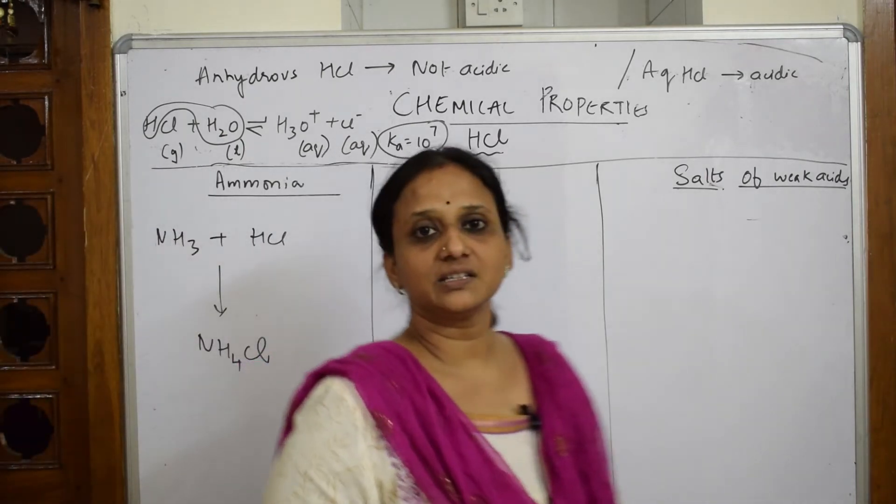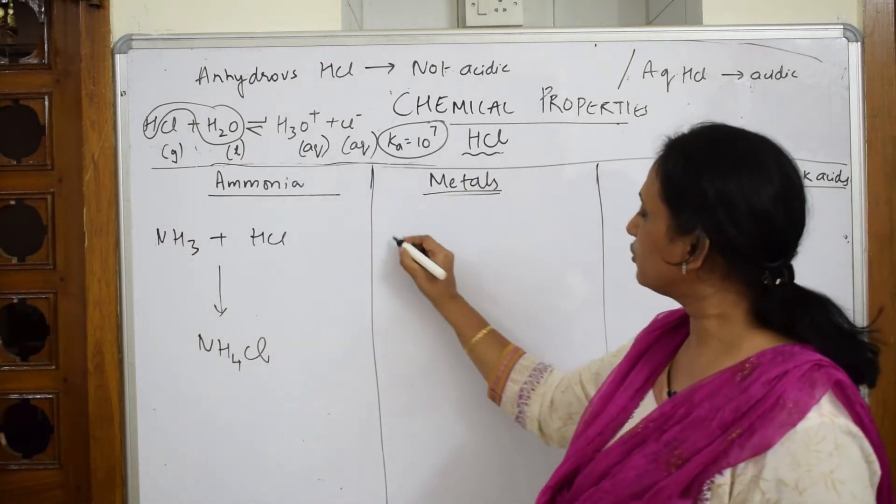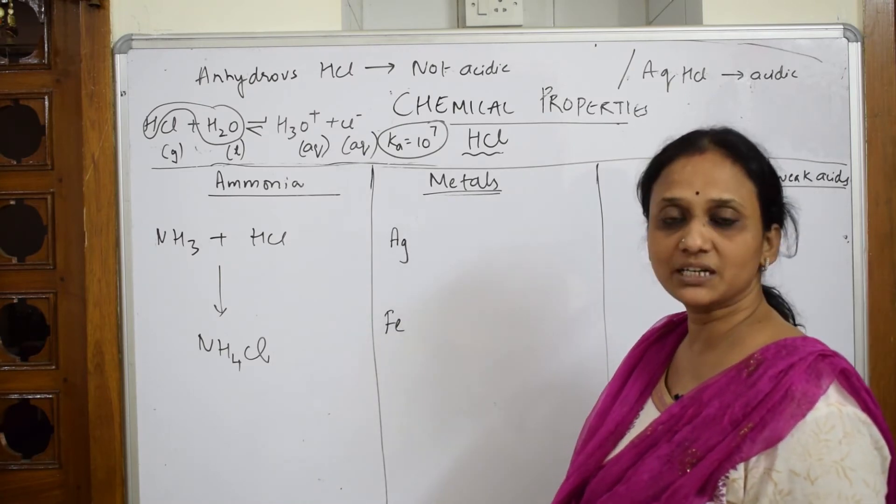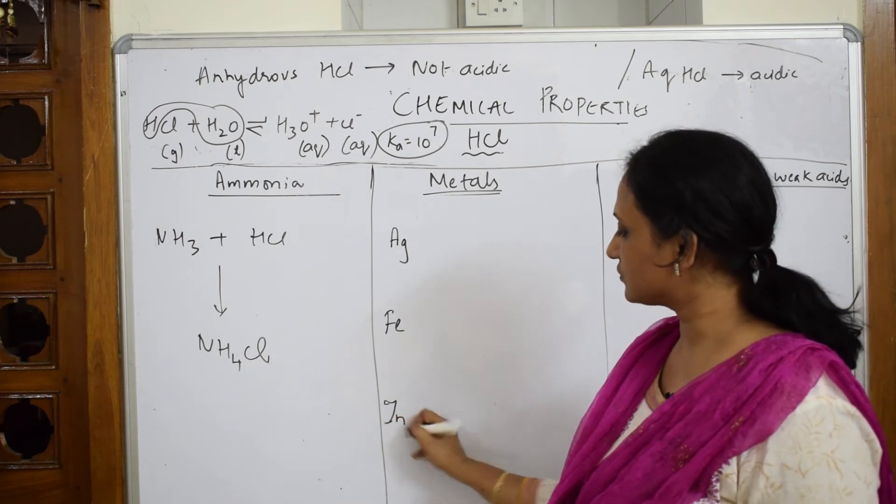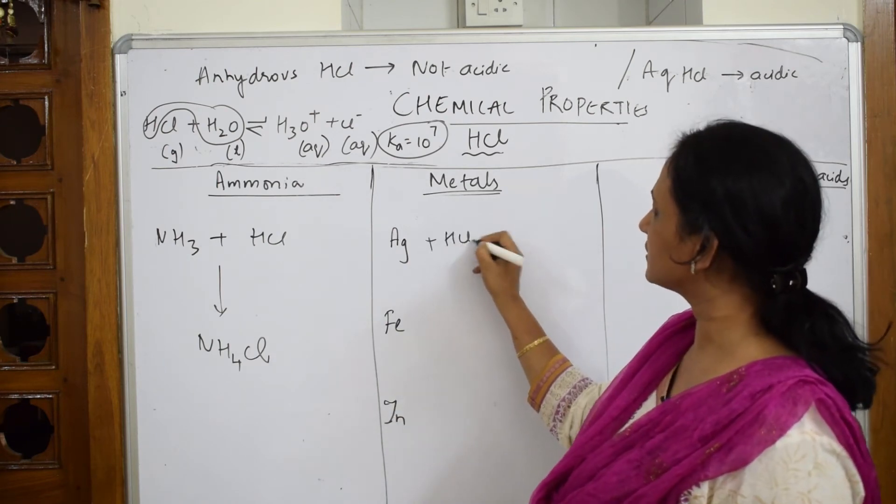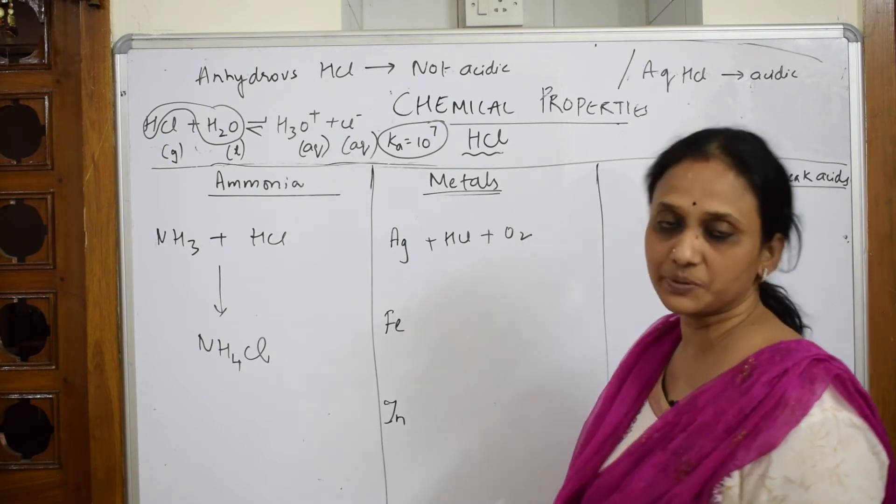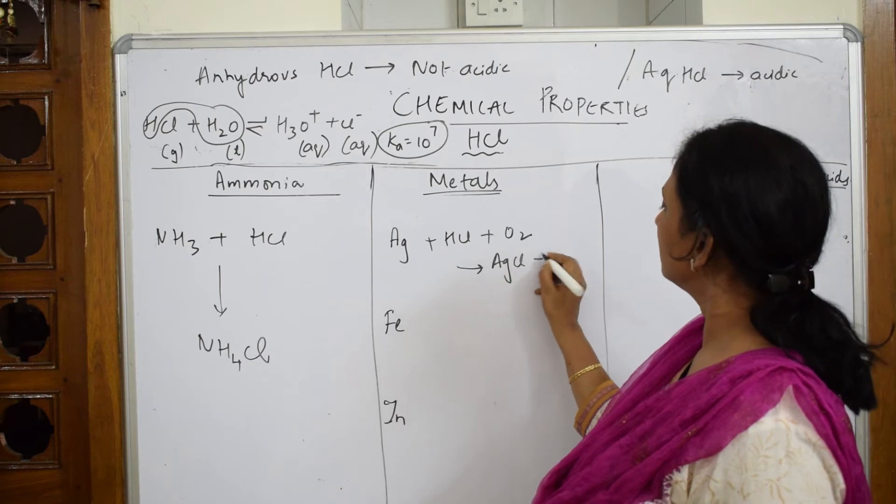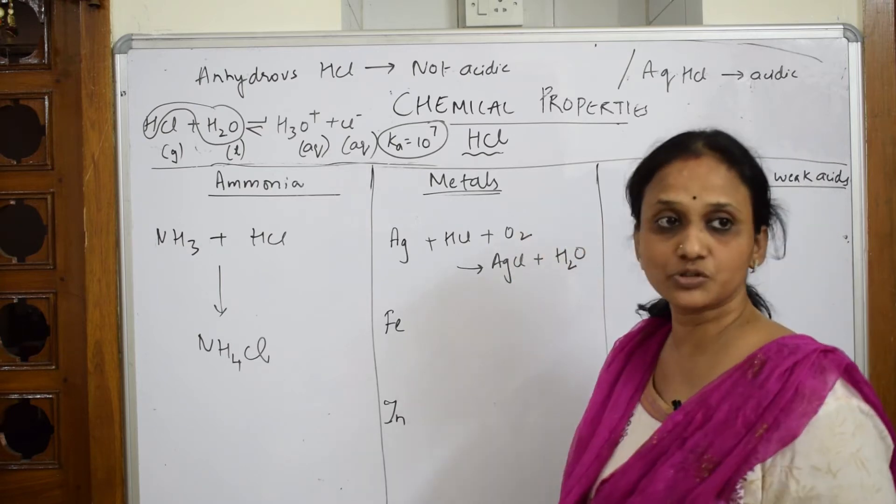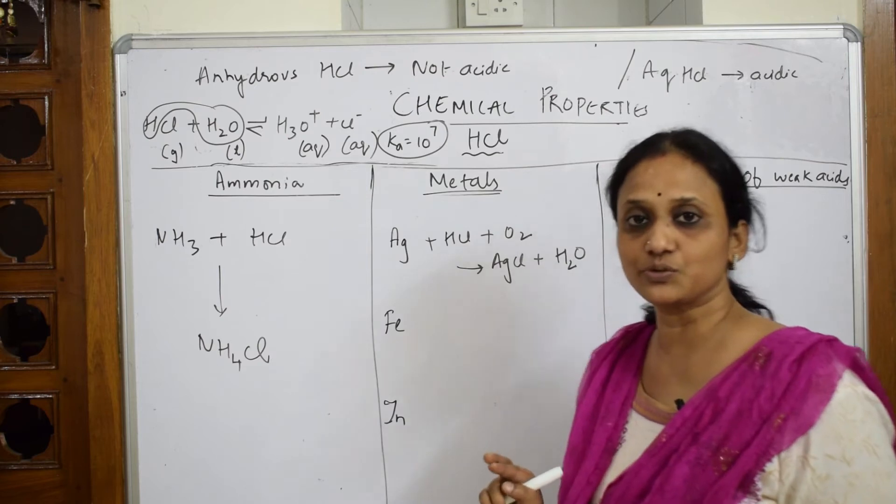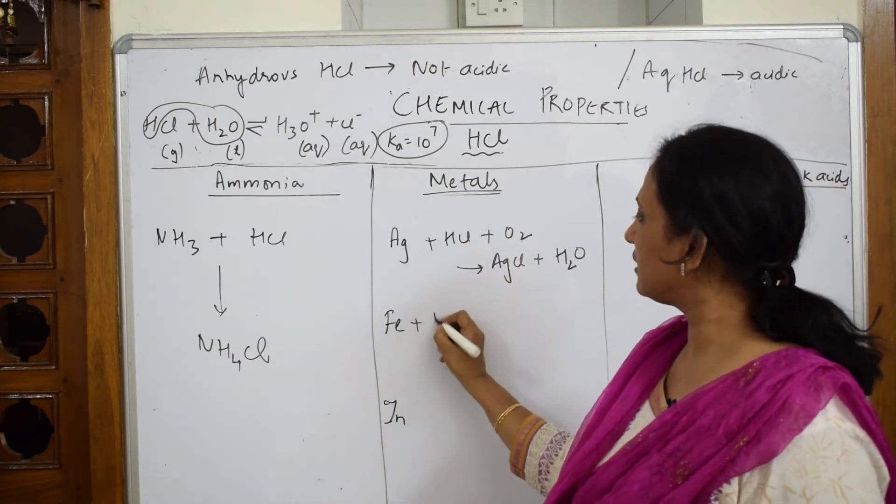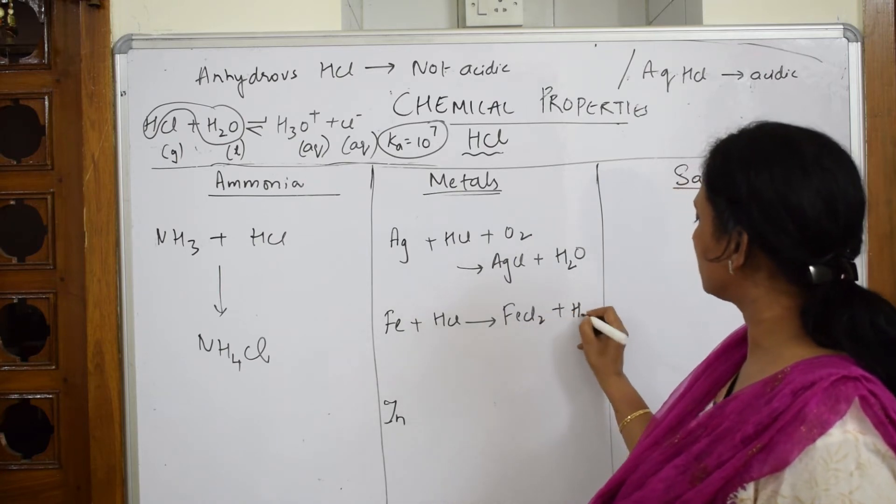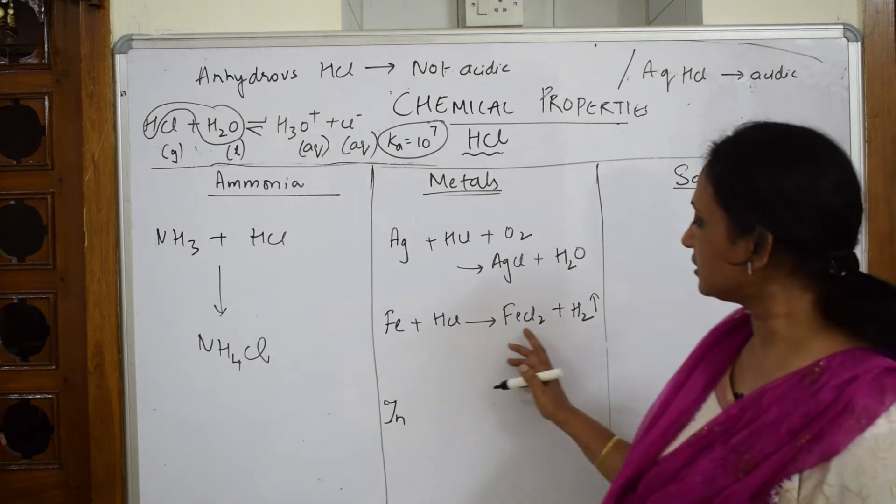If I have to speak about metals, ammonia reacts with metals like silver, medium reactive metals, and zinc. When it is reacting with silver it requires oxygen, in the presence of oxygen only. What do I get? Silver chloride plus water. This is important, most students end up with hydrogen gas, don't do that. Iron plus HCl gives me FeCl2 plus hydrogen gas.